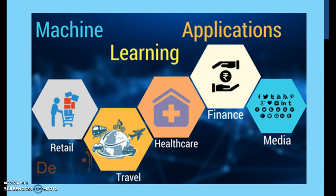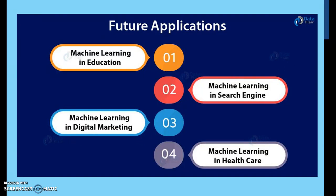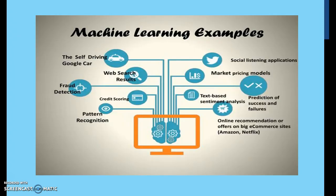We have machine learning applications in retail, travel, healthcare, finance, media, and many other sectors. Machine learning in education is already being applied. Current applications include machine learning in education, machine learning in search engines, machine learning in digital marketing, and machine learning in healthcare. Examples include self-driving cars — the Google car is based on machine learning — web search results, fraud detection, credit scoring, pattern recognition, text-based sentiment analysis, prediction of successes and failures, and online recommendations for offers on big e-commerce sites like Amazon and Netflix, as well as social listening applications.